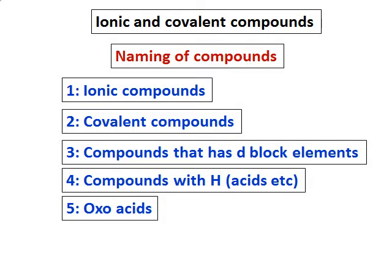After finishing up with bonds, we will learn how to name ionic and covalent compounds. We have different rules for naming ionic compounds, then rules for naming covalent compounds. Compounds that have d-block elements apply different rules. And compounds that are acids, like those which have hydrogens and oxoacids, will have different ways of naming. We will deal with each one of them in this slide.